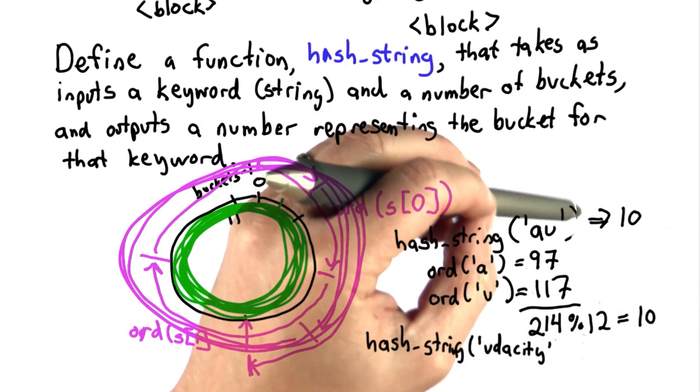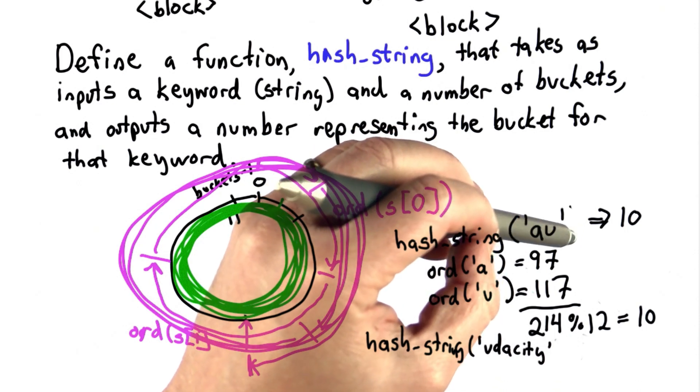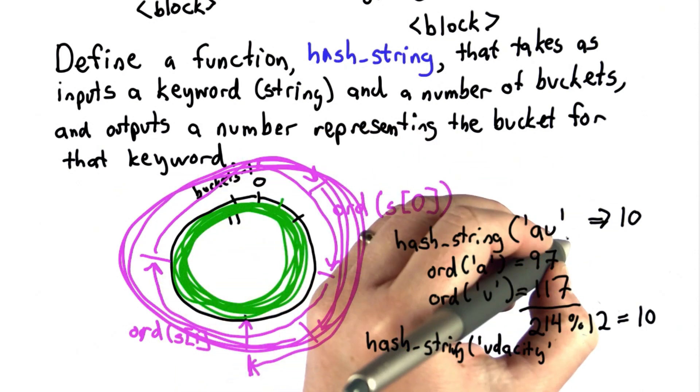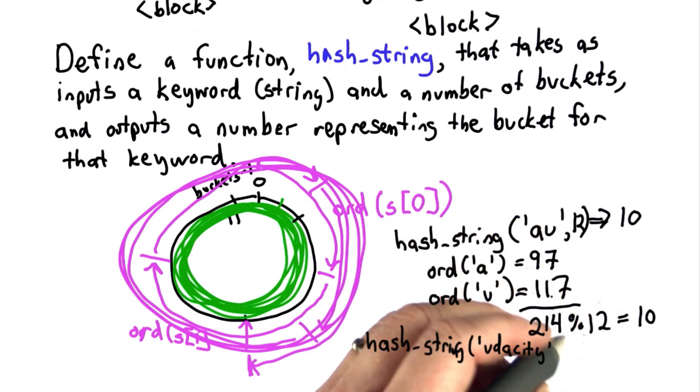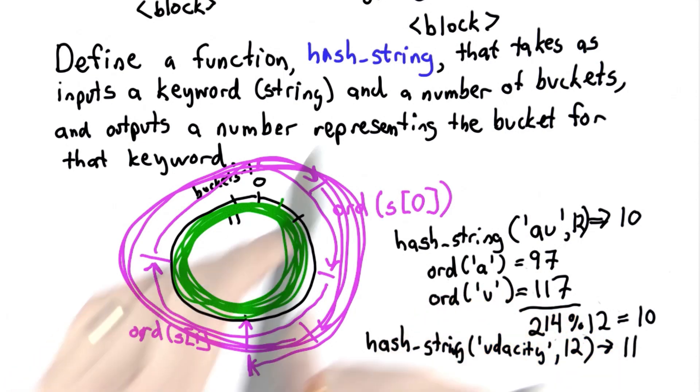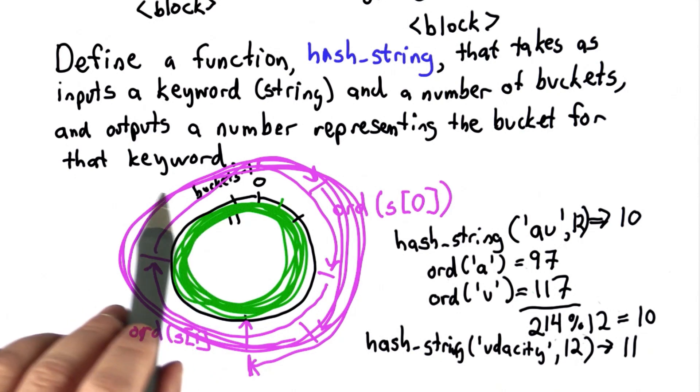We need two inputs to hash_string. Both the string and the number of buckets matter. So here we're also assuming 12 buckets. Here we'll use 12 buckets again. The result should be 11. So see if you can define a function hash_string that does this. We want it to take these two inputs and produce a number that tells us what bucket that keyword should be in.